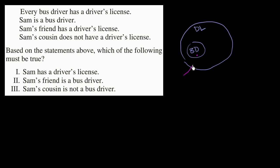Sam is a bus driver — so this is Sam right over there. Sam's friend has a driver's license, so Sam's friend could be anywhere in this larger driver's license circle. Sam's cousin does not have a driver's license, so Sam's cousin sits out over here, outside the driver's license set.